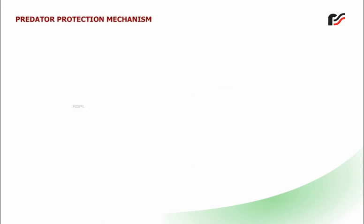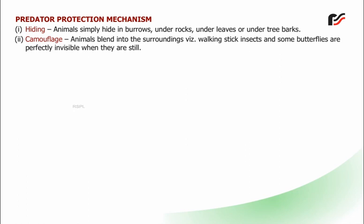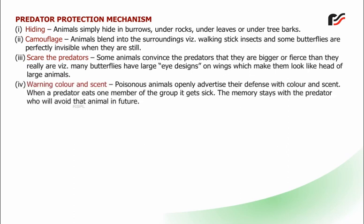Predator protection mechanisms: The first is hiding — animals simply hide in burrows, under rocks, under leaves, or under tree barks. The second is camouflage — animals blend into the surroundings; walking stick insects and some butterflies are perfectly invisible when they are still. The third is scaring the predators — some animals convince predators that they are bigger or fiercer than they really are; many butterflies have large eye designs on their wings, making them look like the head of a large animal. The fourth is warning colour and scent — poisonous animals openly advertise their defence with colour and scent; when a predator eats one member of the group, it gets sick, and the memory stays with the predator, who will avoid that animal in future.